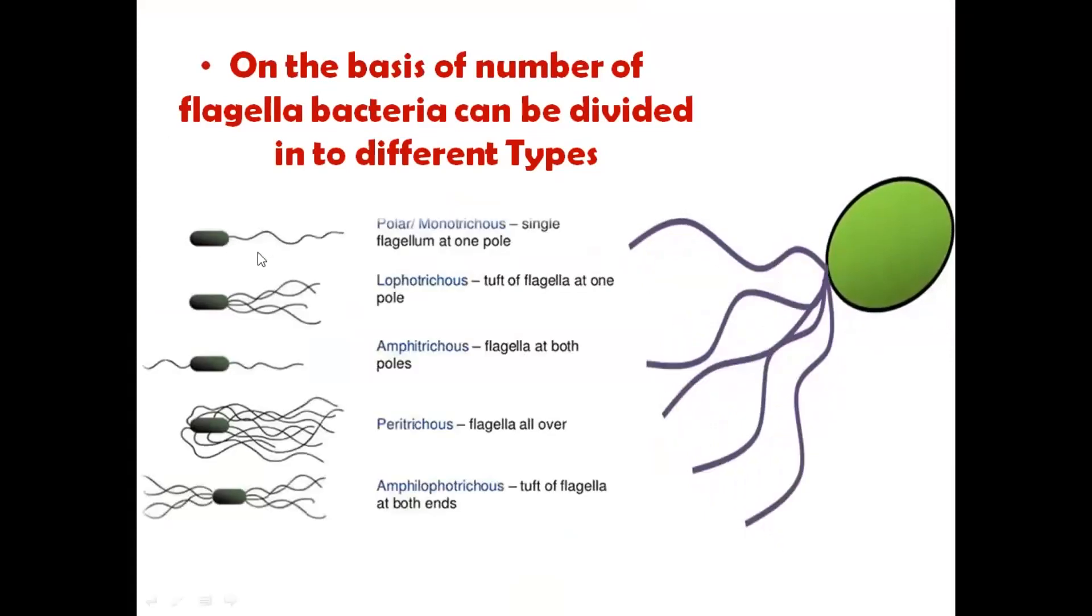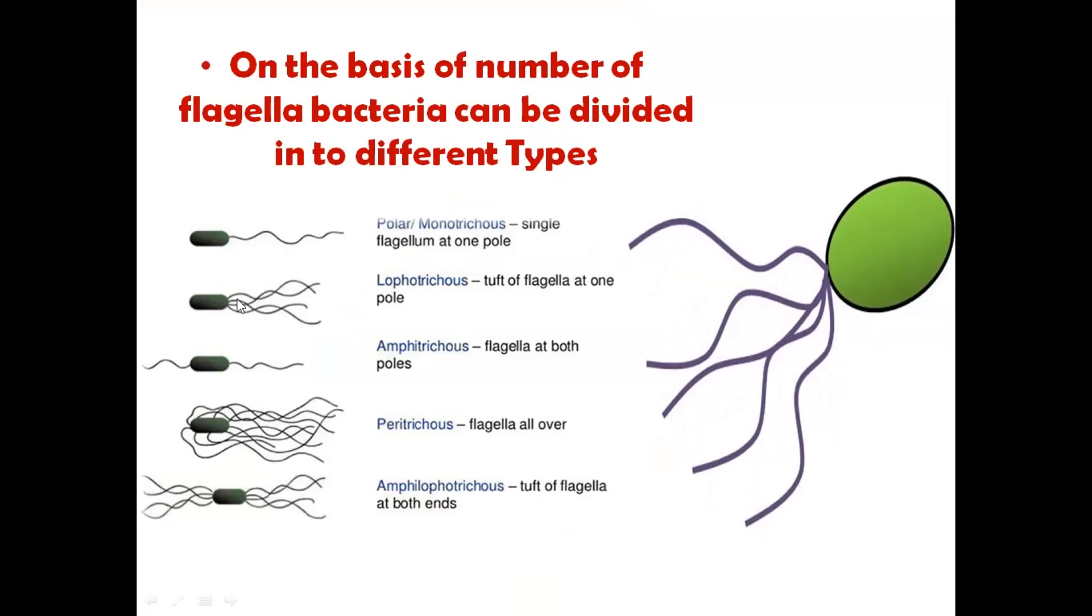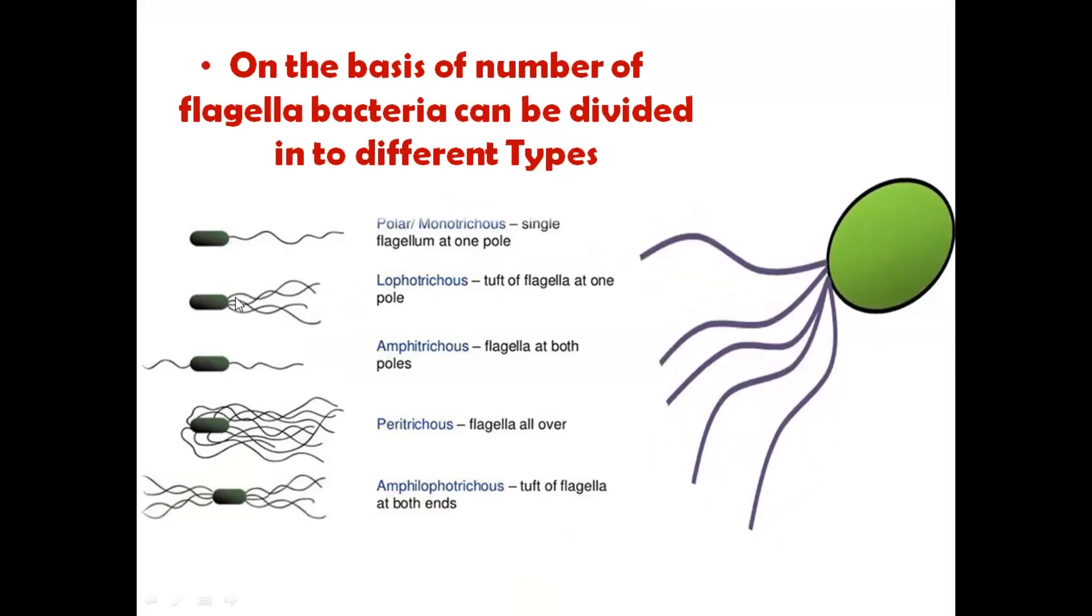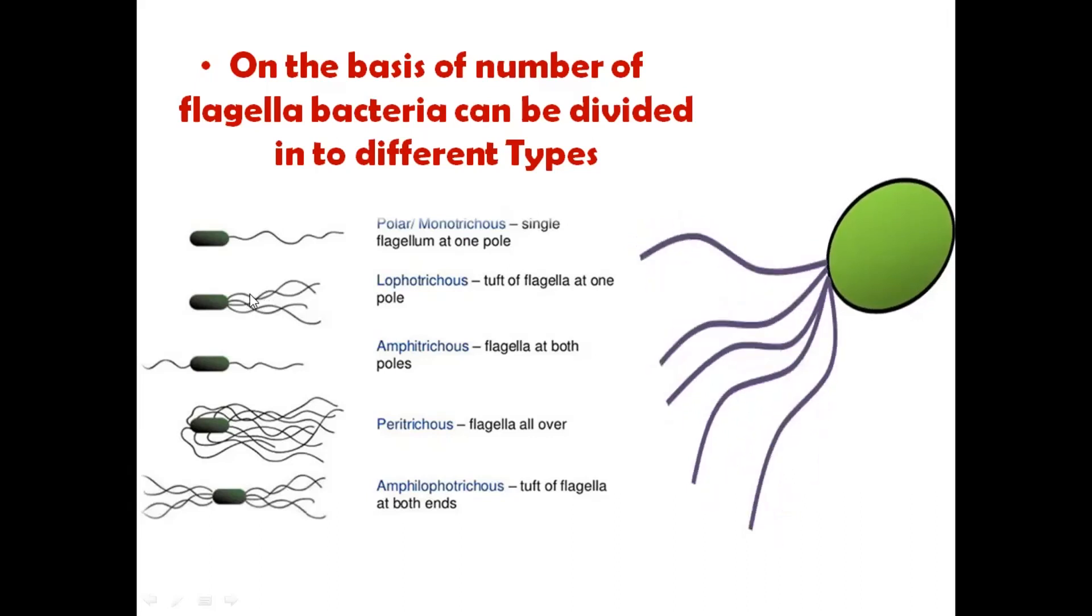For example, if there is a single flagellum at one pole of the bacterial cell, or if there is a tuft of flagellum at one pole of the bacterial cell, here you can see it is not a single flagellum but there are many flagella protruding out from the bacterial cell and they are forming a tuft.